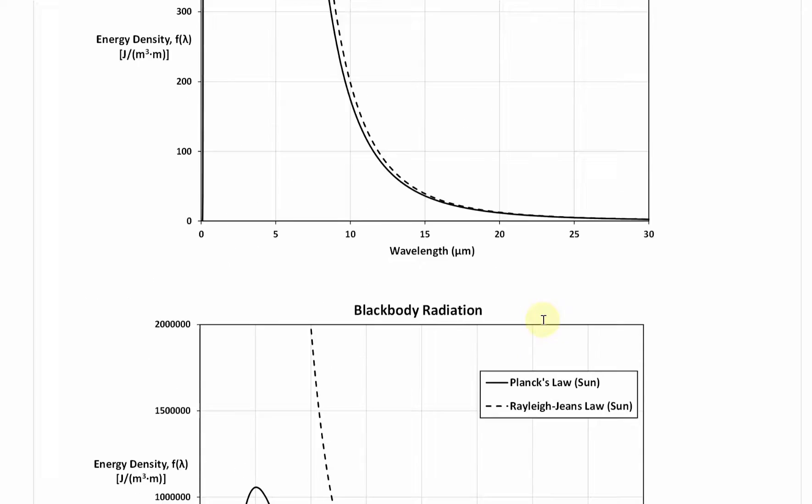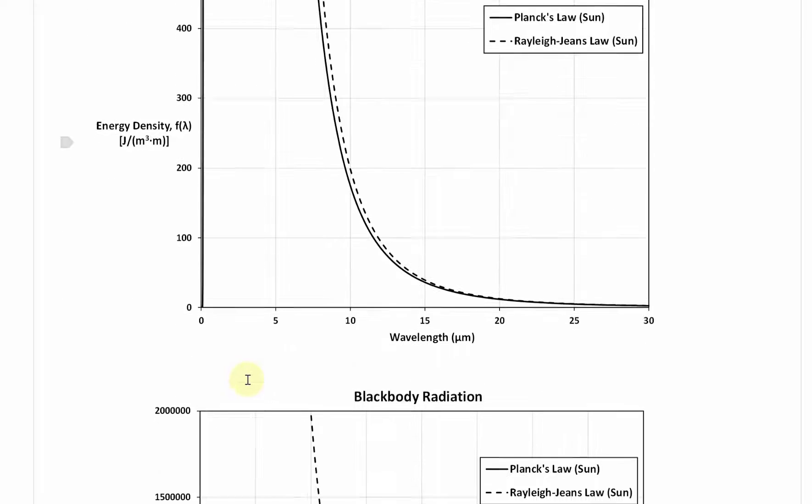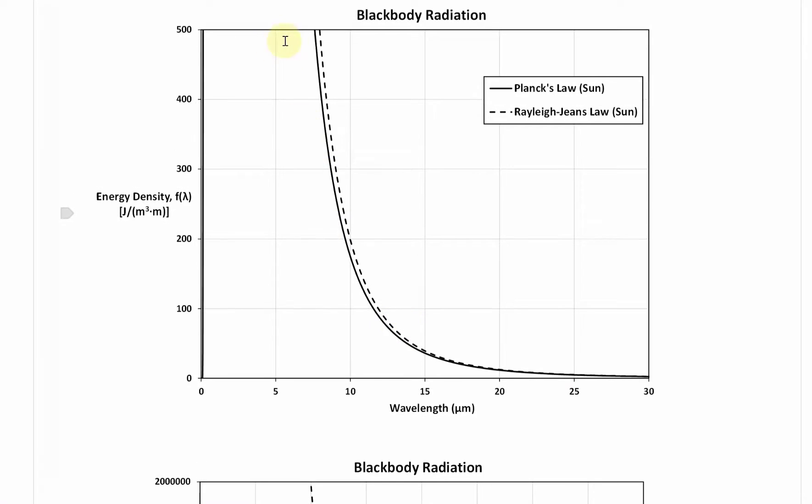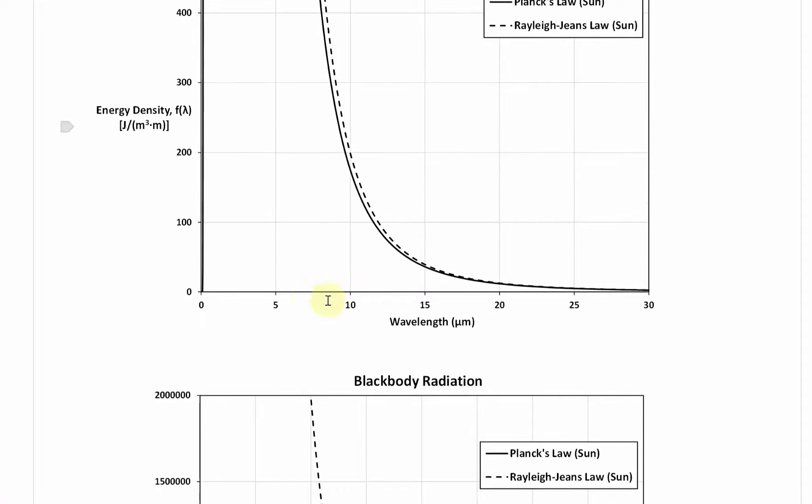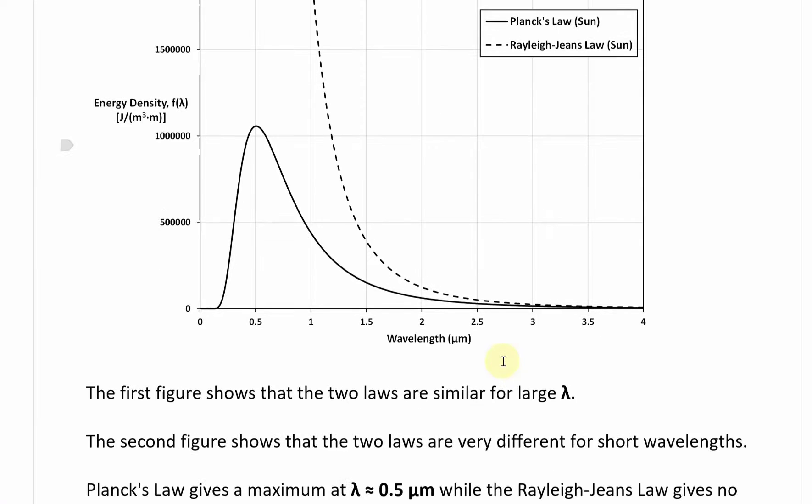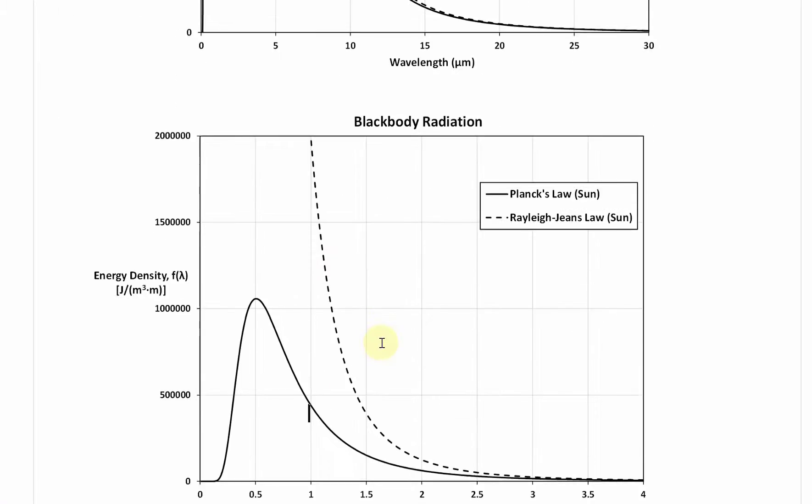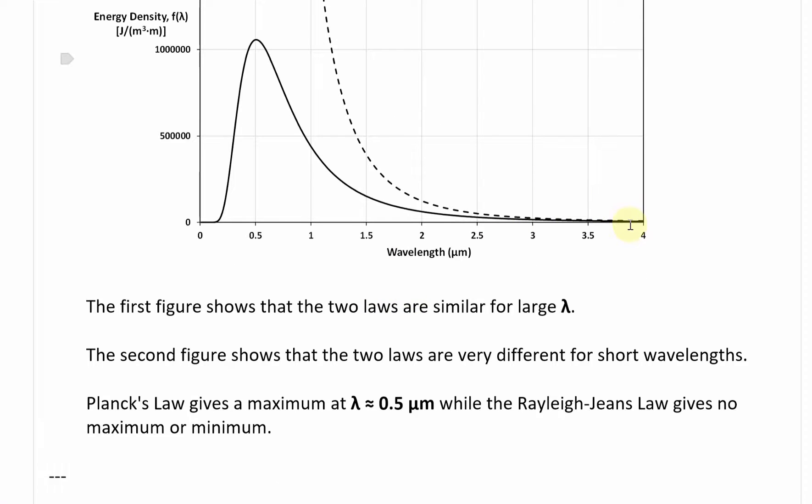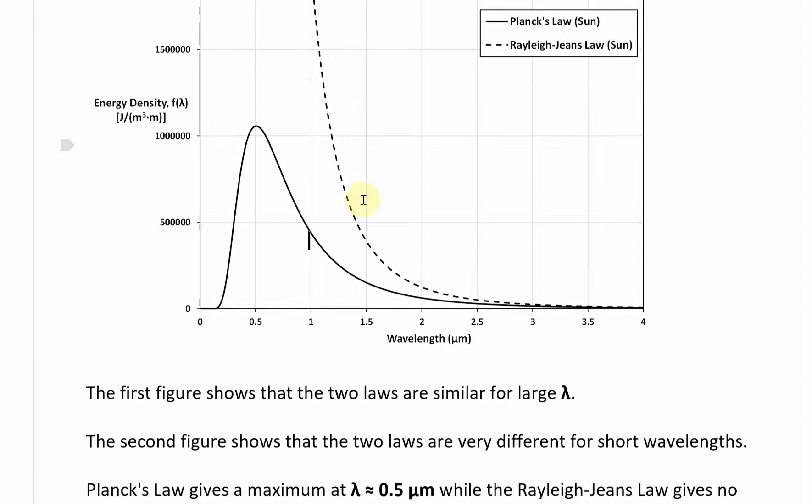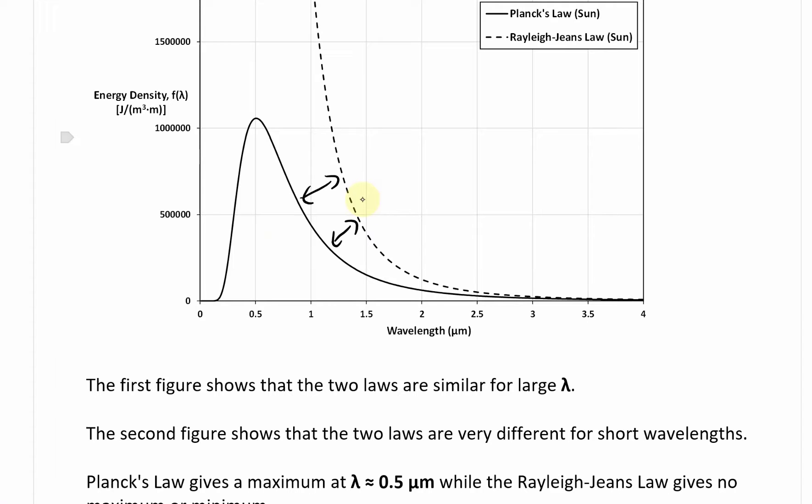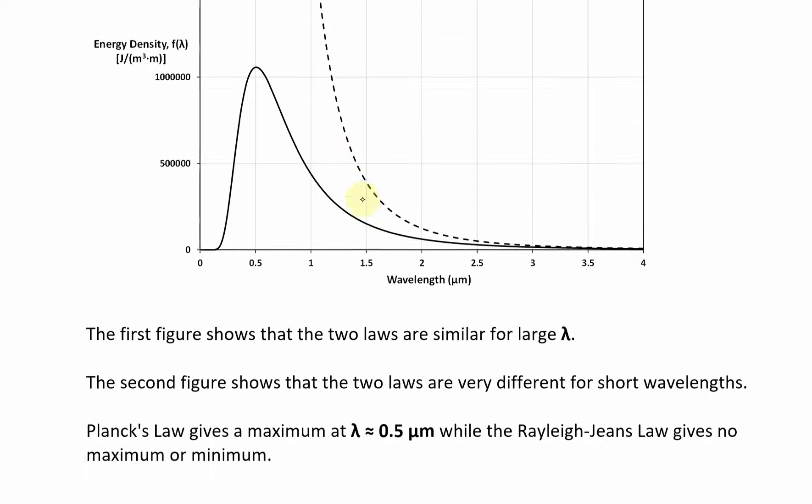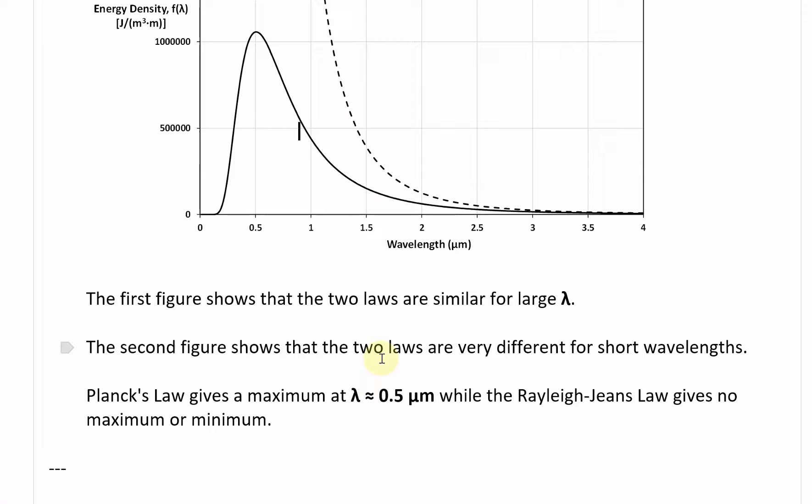Then Rayleigh-Jeans law just keeps going skyrocketing up to infinity. The first figure shows that the two laws are similar for large wavelengths. Once you get below this, it starts messing up. Above 10, even above 5, but once you get below a wavelength of 4 or 3, all the way closer and smaller, there's a big divergence. It gets bigger and bigger and goes to infinity.